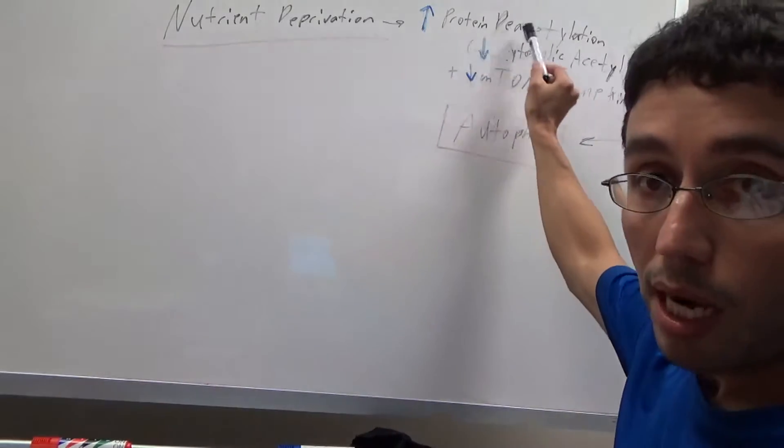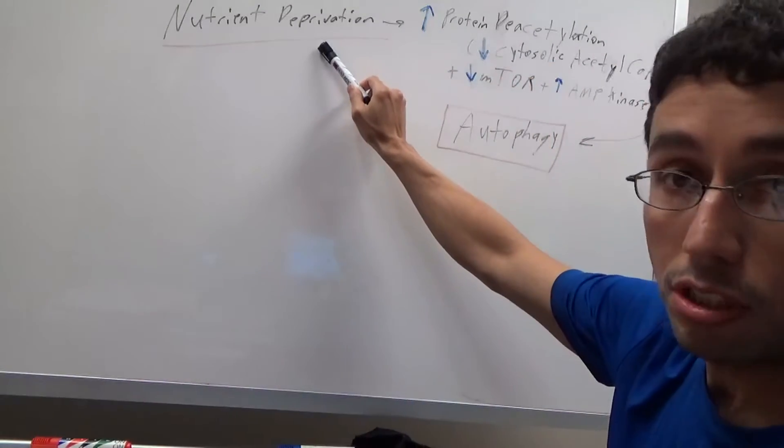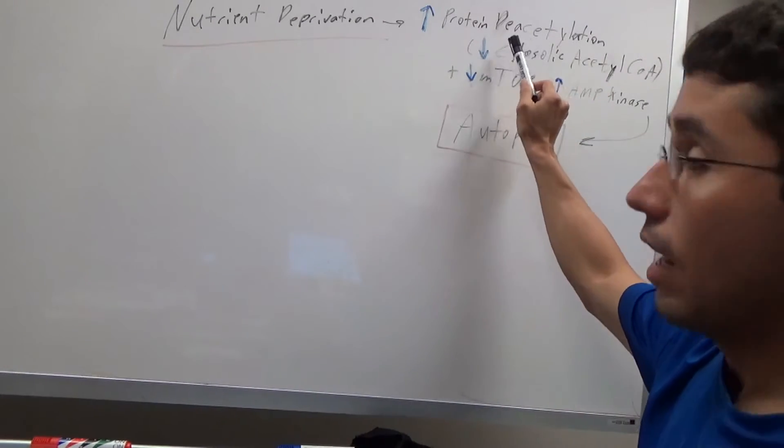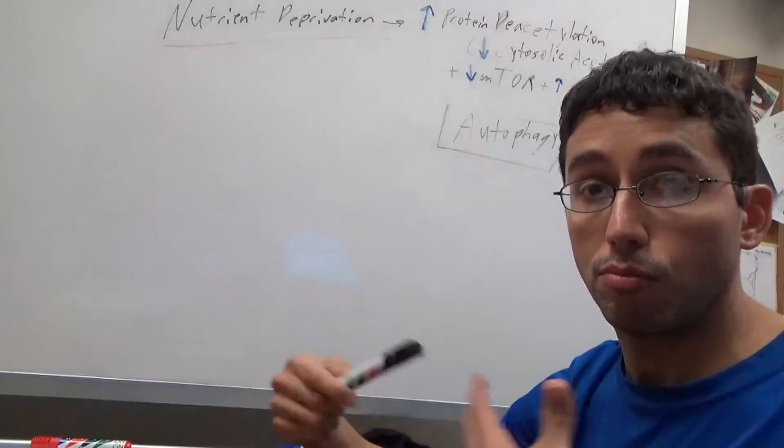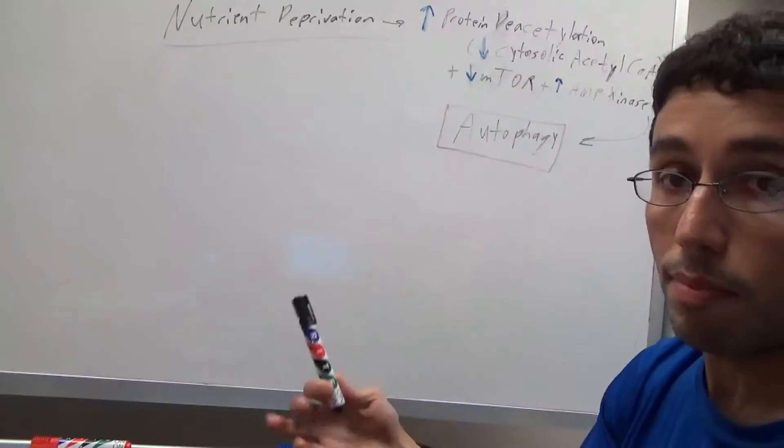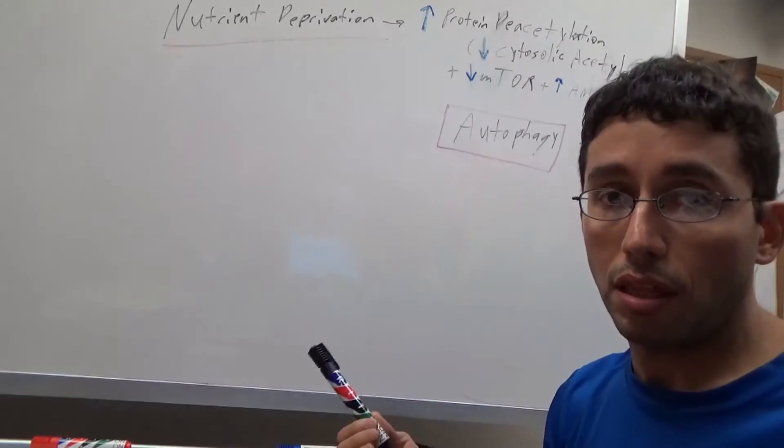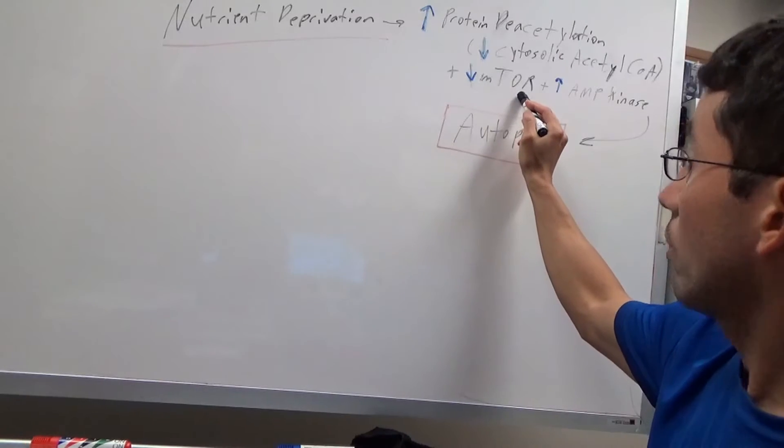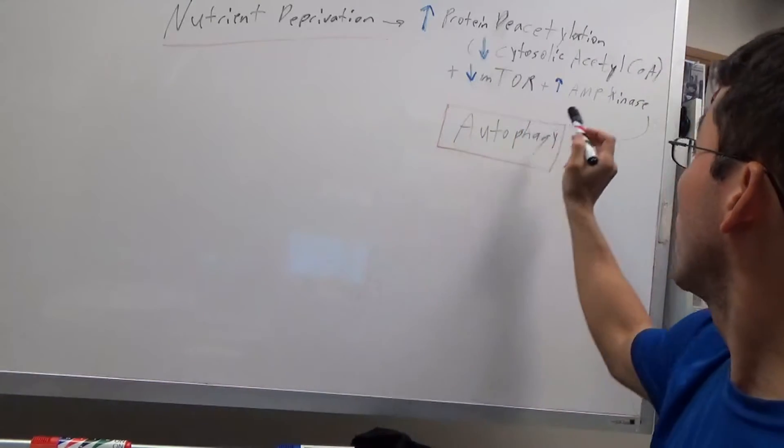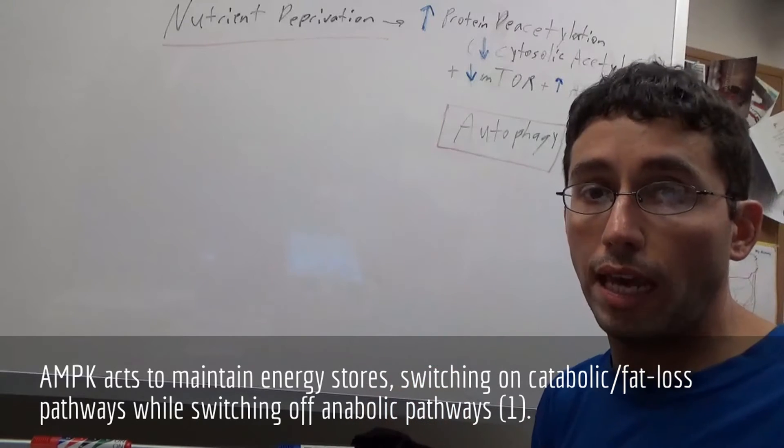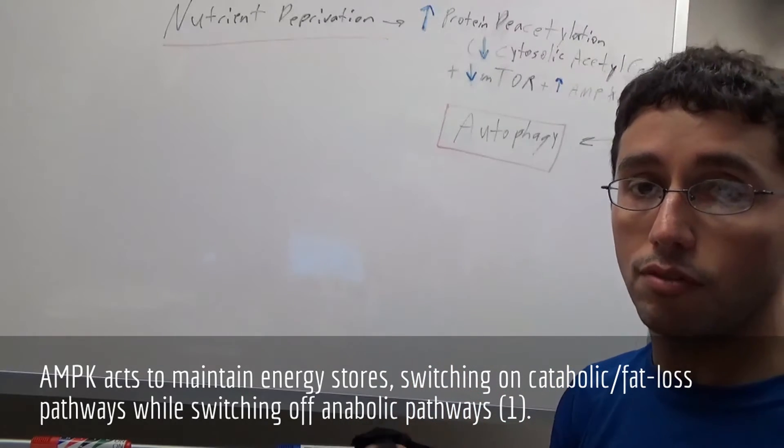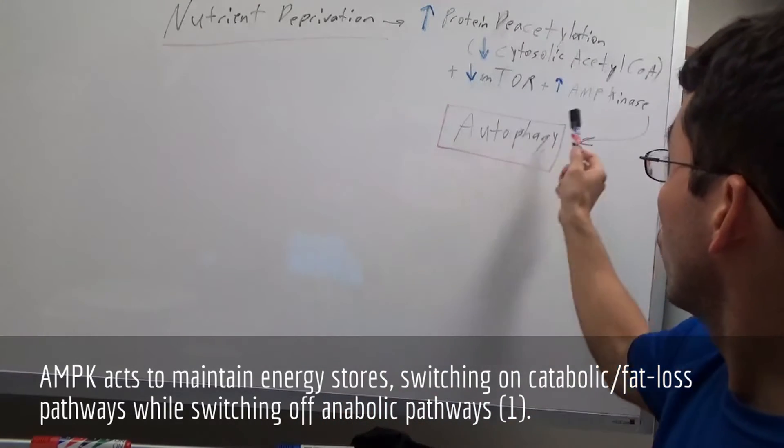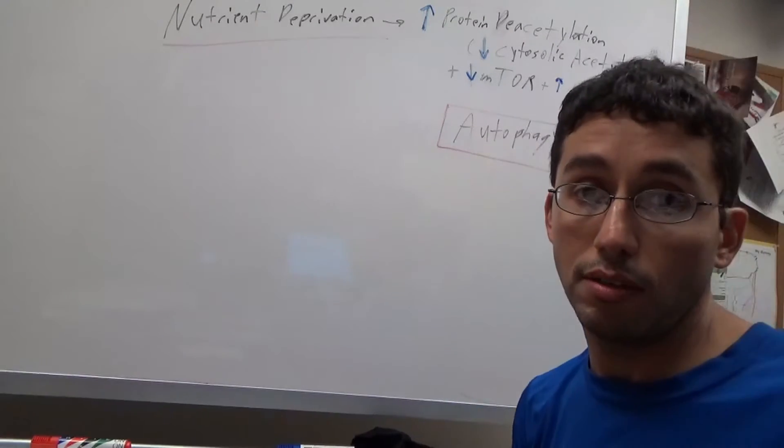This is all catabolic. You have reduced energy supply and these reactions going on, so the body has to start breaking down its own stored energy, which is a catabolic function. Then you have decreased levels of mTOR. I think of mTOR as this building, anabolic substance. When you decrease this, it decreases IGF-1, and then you increase AMP kinase. I think of AMP kinase as a fat-burning pathway. This leads to autophagy.